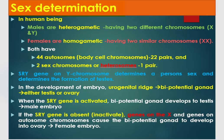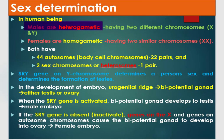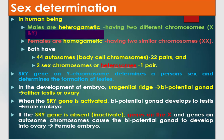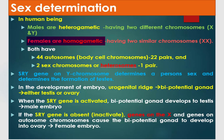Sex determination in human beings: males are heterogametic, which means having two different chromosomes, X and Y. Females are homogametic — they have two similar chromosomes, X and X.